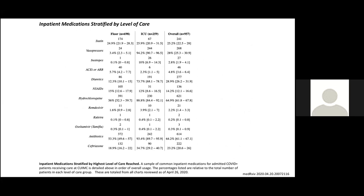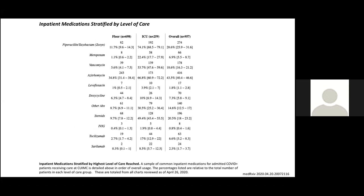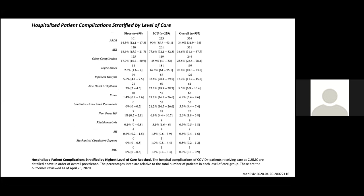Once patients are in the hospital — those who didn't go home from the emergency department — hydroxychloroquine has been given to almost two-thirds of patients. You can see the proportion given other antiviral drugs, and things like statins and ACE inhibitors continuing from outpatient therapy. Vasopressors are very high in the ICU at 94%. The other half of the table shows more detail about which antibiotics they received and whether they got steroids — 50% in the ICU.